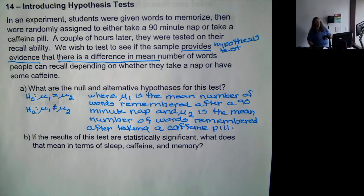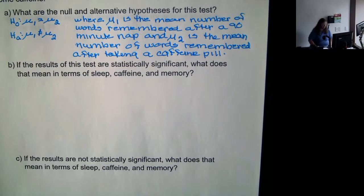Instead of μ₁ and μ₂ you could use μₙ to represent the mean of the nap and μ_c to represent the mean of the caffeine, but you still have to describe or explain what they represent.